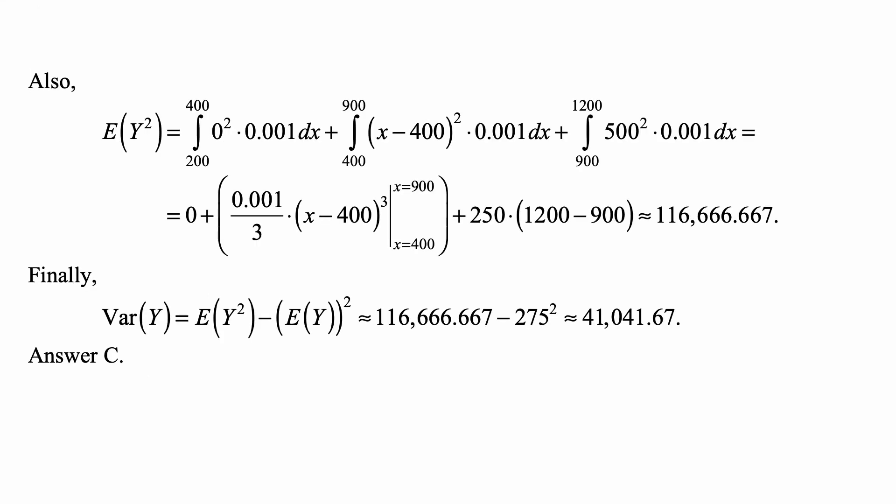The second moment is calculated roughly the same way, except that the values of the random variable are squared. So it's 0 squared for the first integral, (X minus 400) squared for the second, and 500 squared for the third.